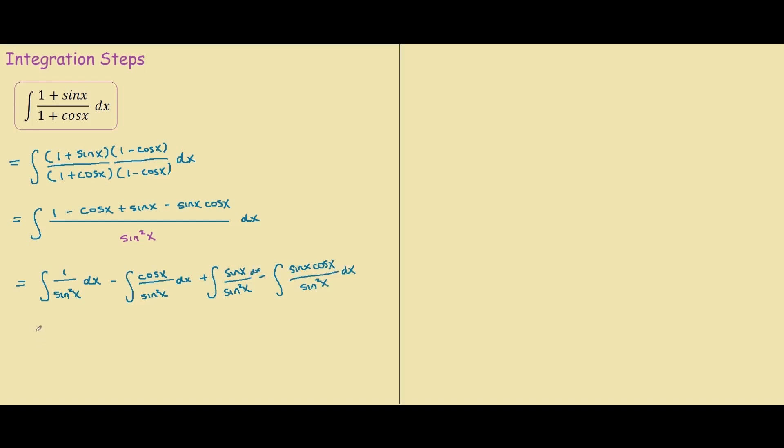Our next step is to simplify down the fractions into something we're more familiar with. So we have the integral of 1 over sine squared x and we know that 1 over sine x equals cosecant, so we have cosecant squared x.